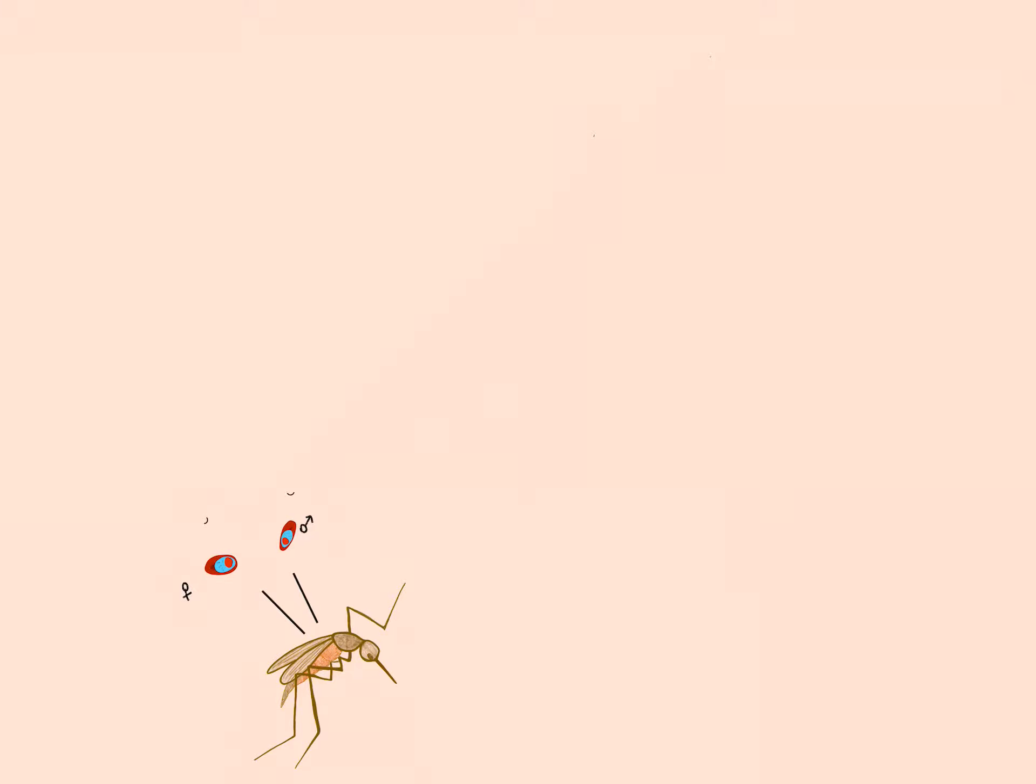In its gut, the infected erythrocytes lyse and gametes fuse to form a diploid zygote called ookinete, which then migrates to gut wall, penetrates it forming an oocyst on the exterior, which undergoes meiosis forming sporozoites. This process is called sporogony.